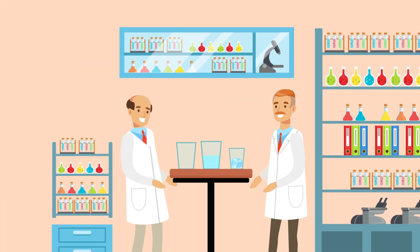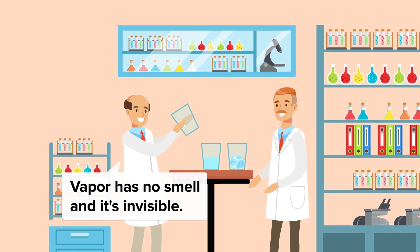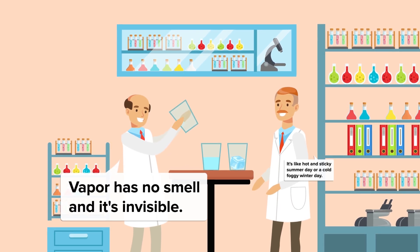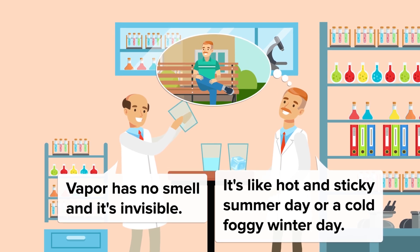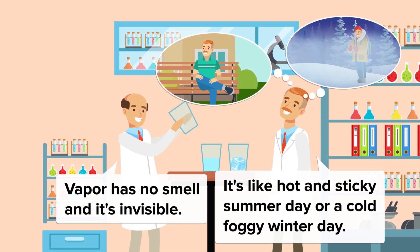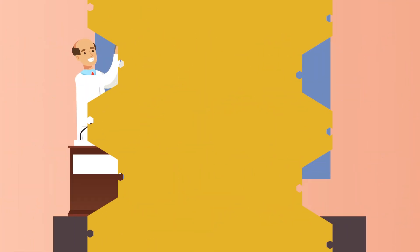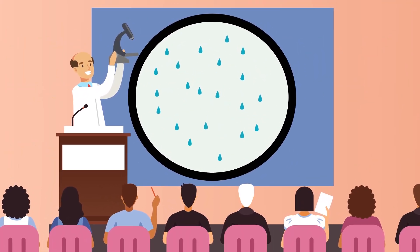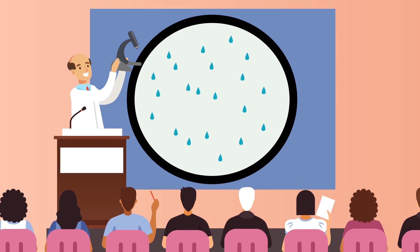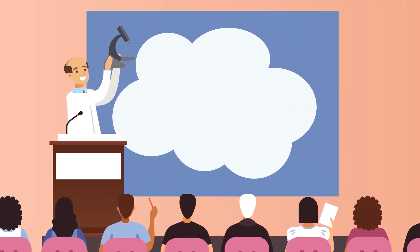Water can be either solid as ice, liquid as water, or gas, which is a vapor. Vapor has no smell and it's invisible, but you can feel it. Imagine a hot and sticky day in summer, or a cold foggy day in winter — those sensations are water vapor. If you put steam or vapor under the microscope, you would see millions of tiny water droplets floating in the air. This is the same process that forms clouds: millions of tiny water droplets condensing out of the air to form liquid water.